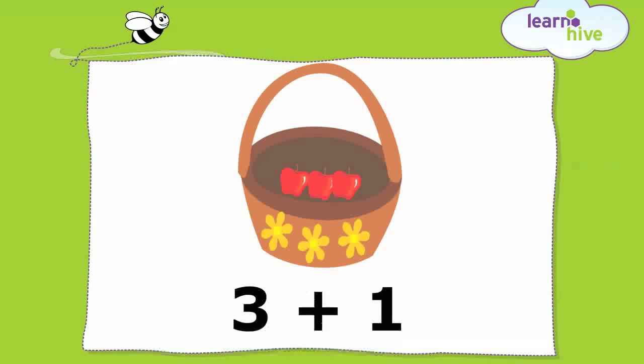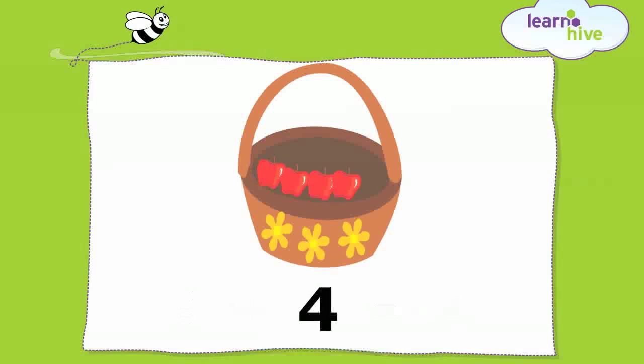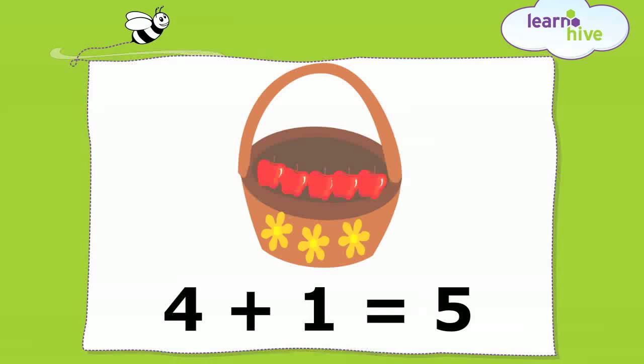Let us add one more apple. So, one added to three gives four. Adding one more apple gives five.